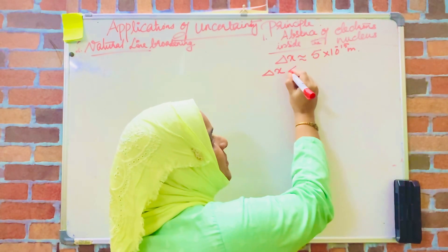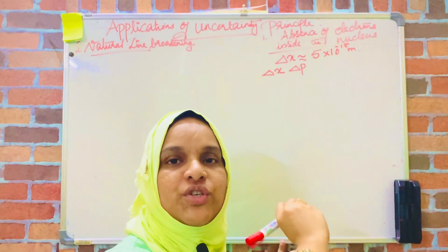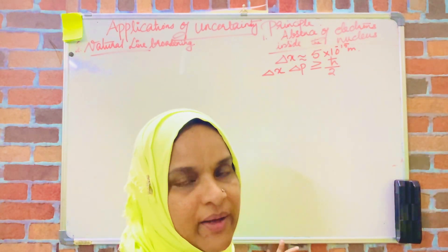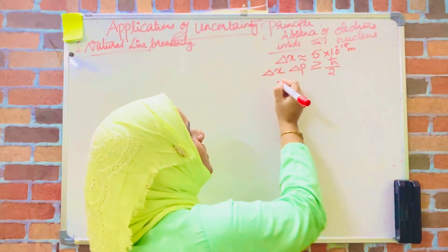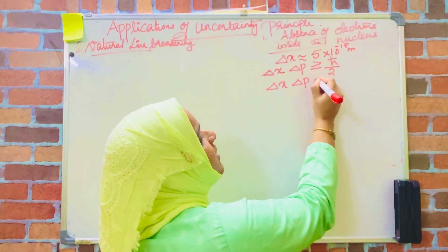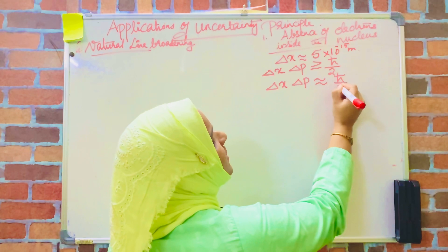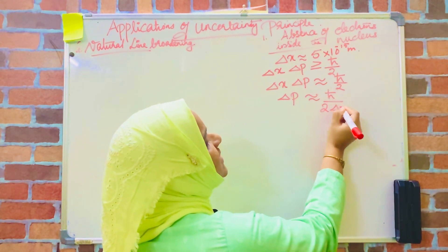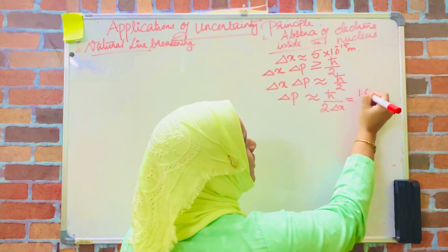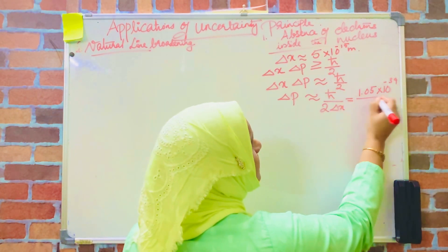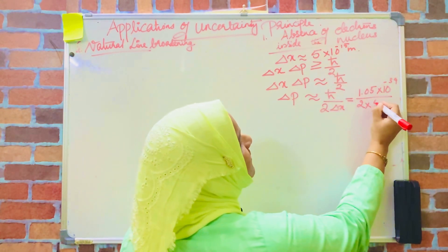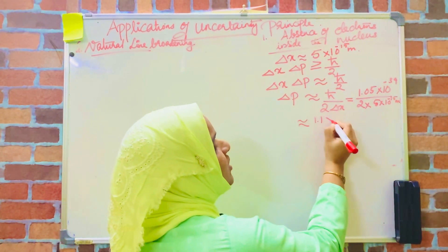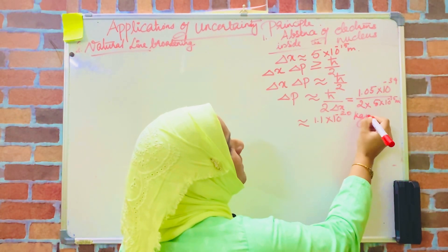Applying the uncertainty principle in position and momentum: delta X times delta P should be greater than or equal to h-bar by 2, where h-bar is h by 2 pi and h is Planck's constant. This gives delta P approximately equal to h-bar divided by 2 times delta X, which equals 1.05 into 10 raised to minus 34 divided by 2 into 5 into 10 raised to minus 15 meters, giving approximately 1.1 into 10 raised to minus 20 kilogram meters per second.